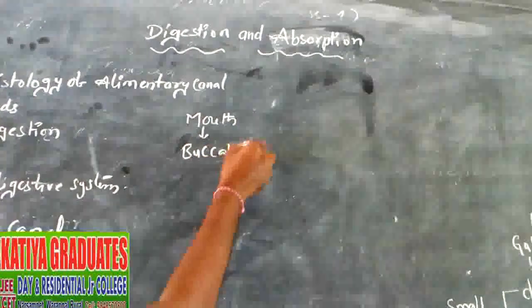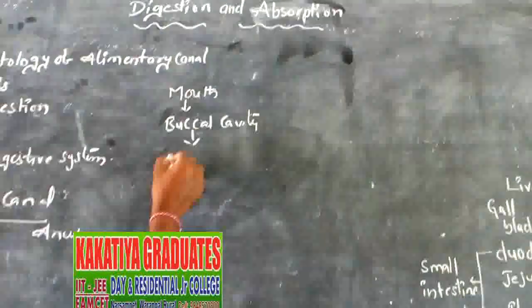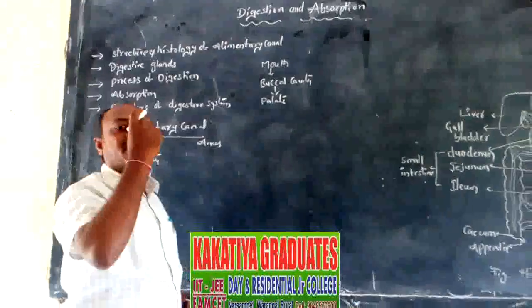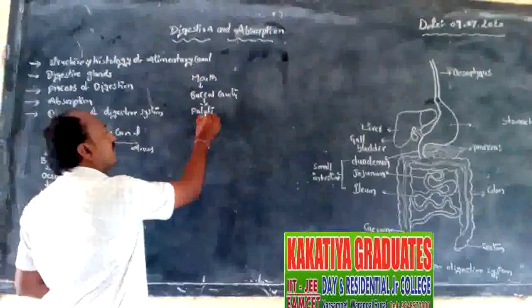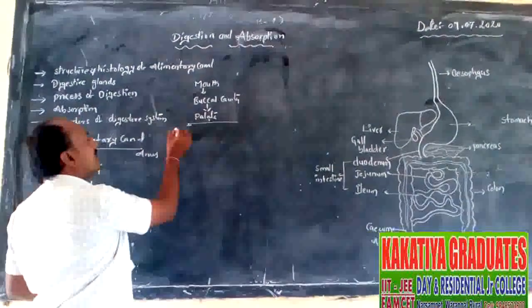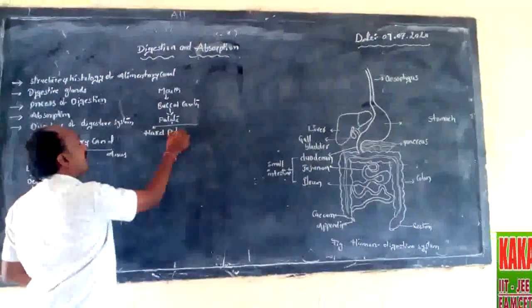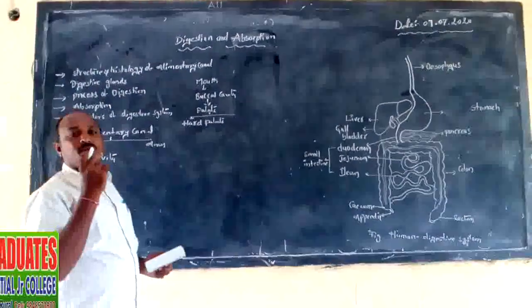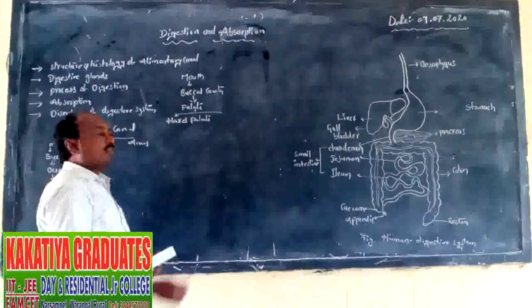In the buccal cavity we observe the palate, which separates the nasal chamber from the buccal cavity. The anterior part of the palate is made up of bone, and is therefore called the hard palate.